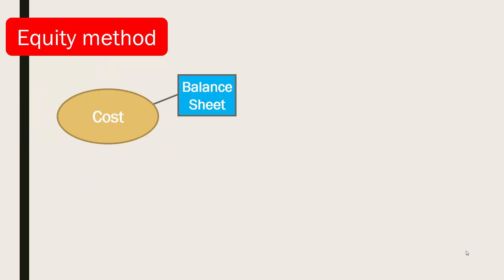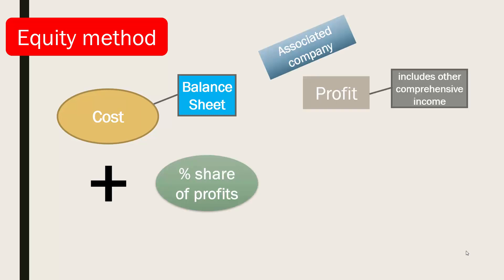Where the equity method is used, the investment is initially recorded at cost in the balance sheet. When the associated company makes a profit, the investor company increases the value of its assets by their percentage share of the profit of the associated company.